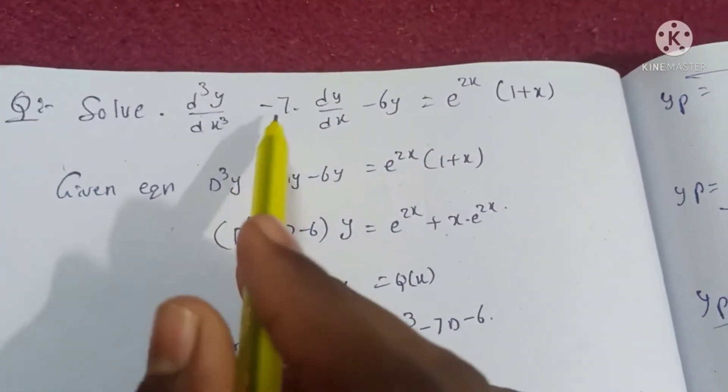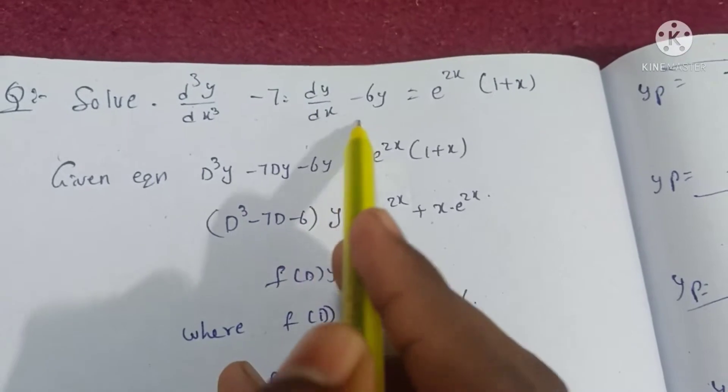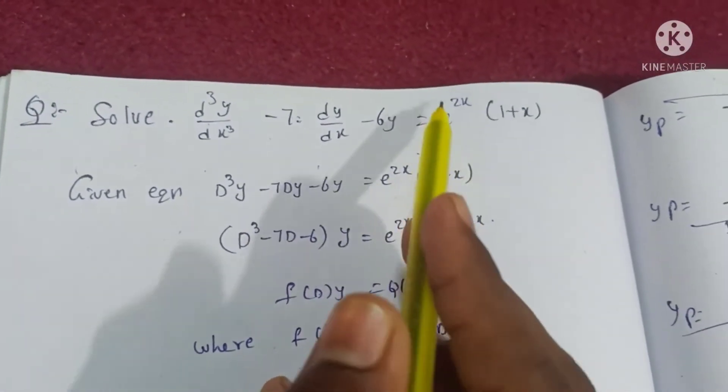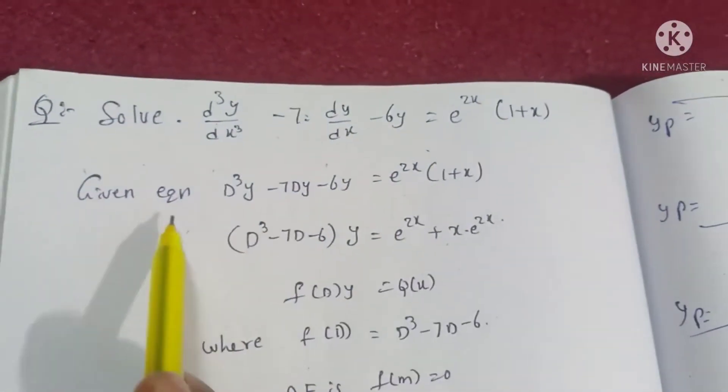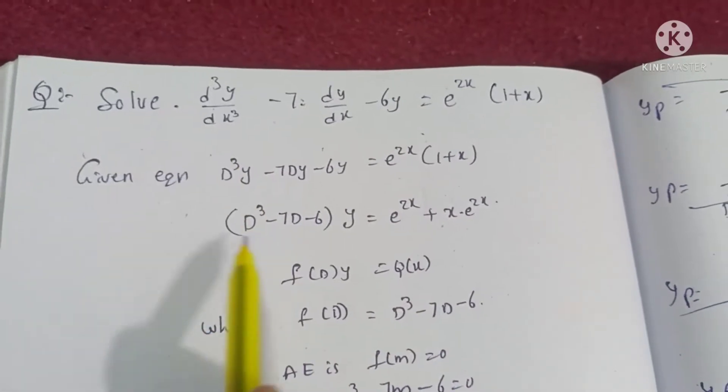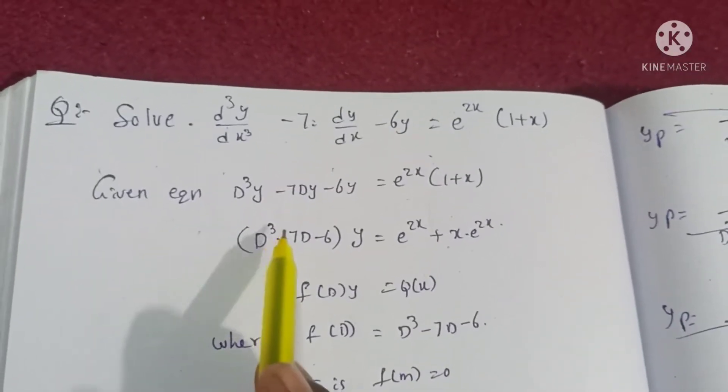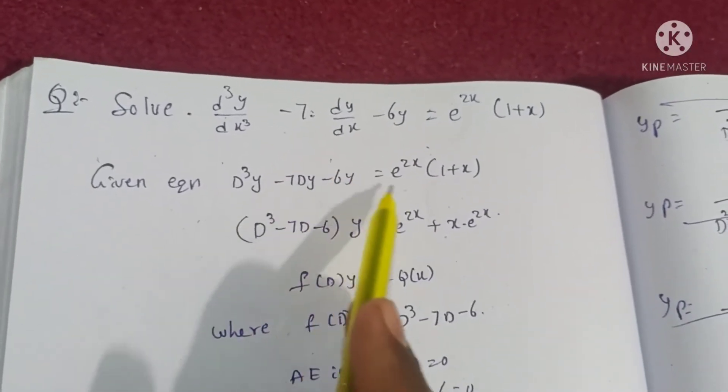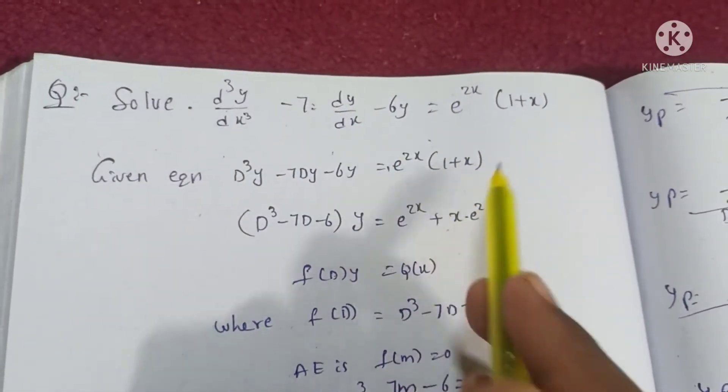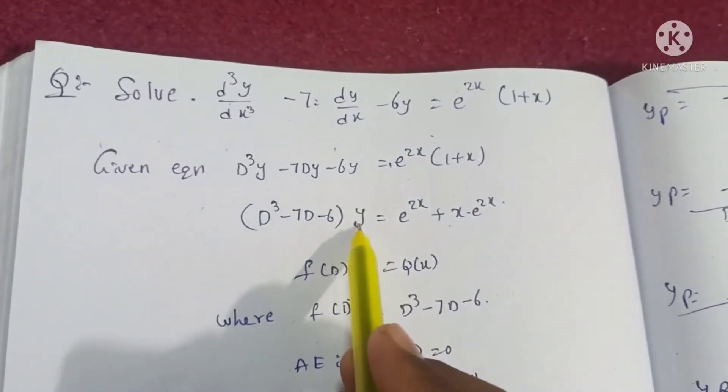The question is: solve d³y/dx³ - 7(dy/dx) - 6y = e^(2x)(1+x). Given equation, we write f(D) times y, where d³y - 7dy - 6y = e^(2x)(1+x). Now y is common, this is the equation e^(2x) into 1 plus e^(2x) times x.